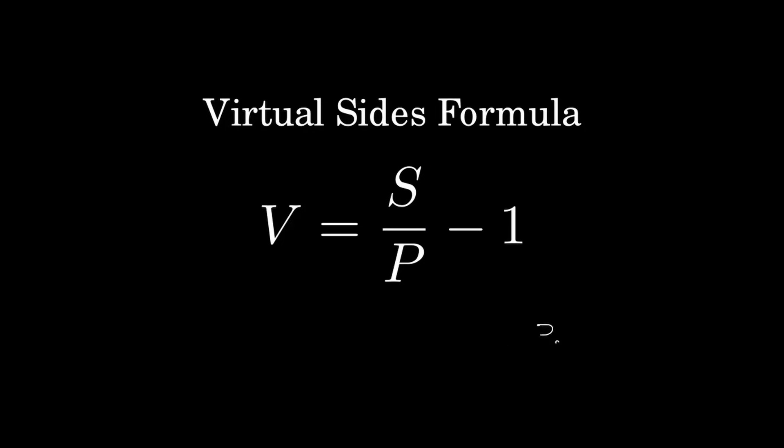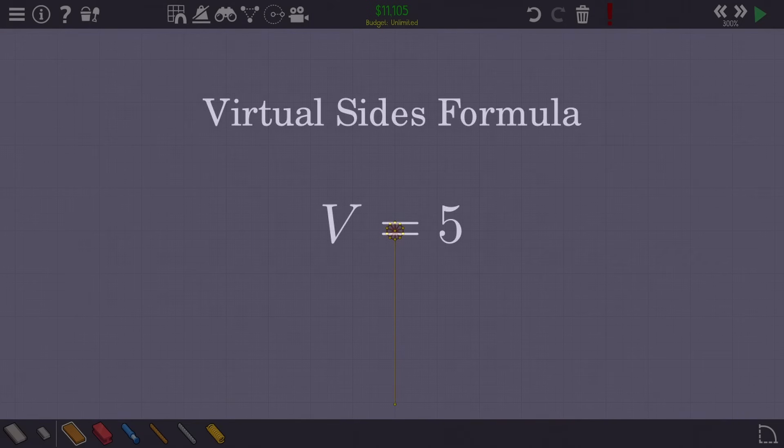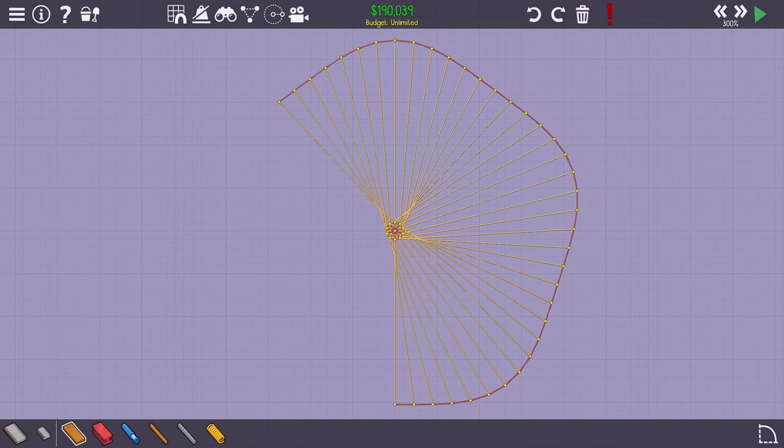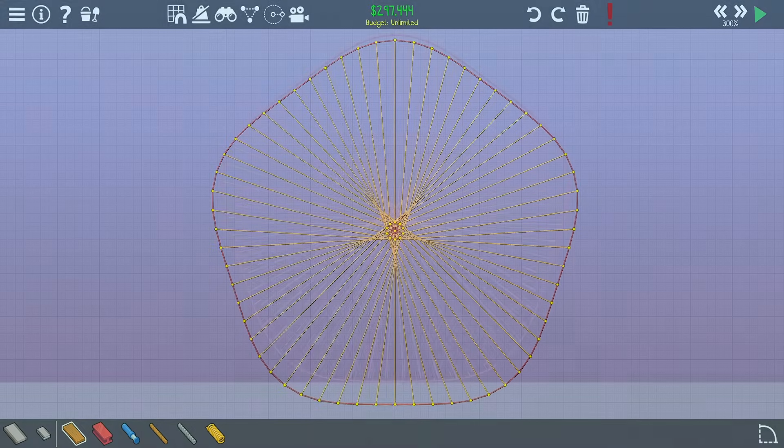So, for instance, if you wanted an Amoeba Wheel with 60 sides and 10 pedals, you can anticipate a shape with five virtual sides, closely resembling a pentagon. And as expected, that's precisely what you obtained.